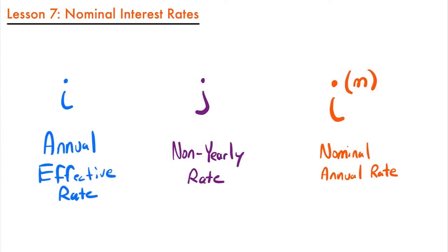Welcome back. Let's talk about nominal interest rates. So far we are familiar with the annual effective rate that we like to denote with the letter i, and these are rates that are compounded once per year.